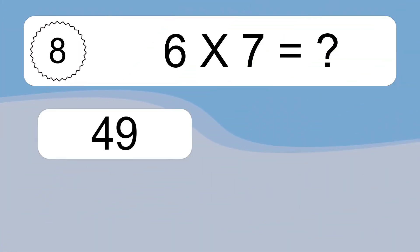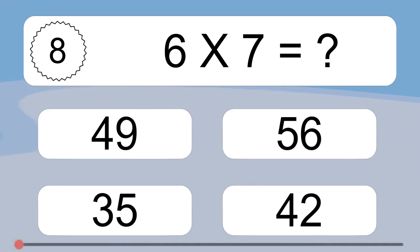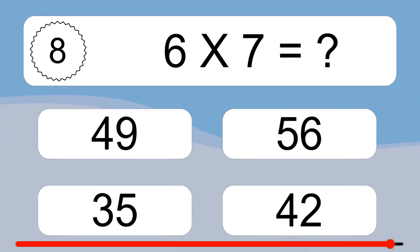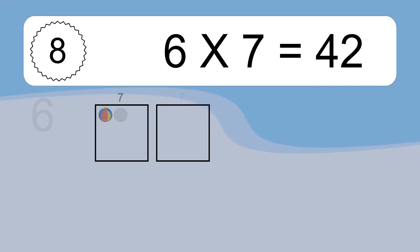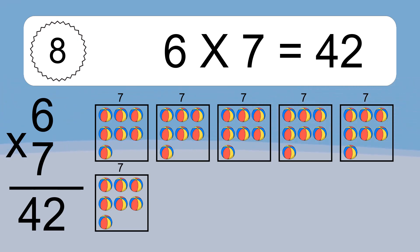6 times 7 equals what? 6 times 7 equals 42. We have 6 boxes, and each box has 7 colorful balls inside. If you count all the balls in all the boxes together, you will have 6 times 7 balls. This equals 42 balls.